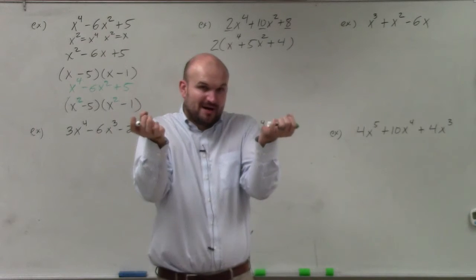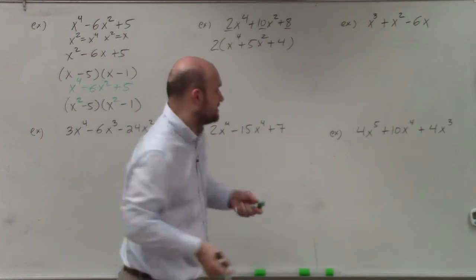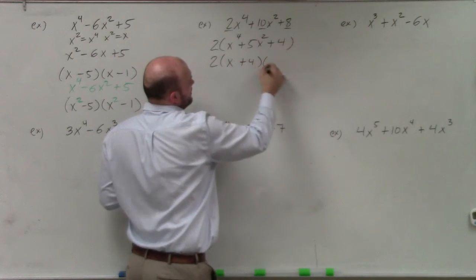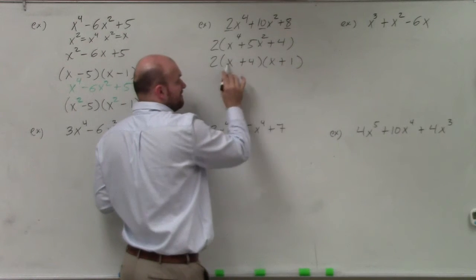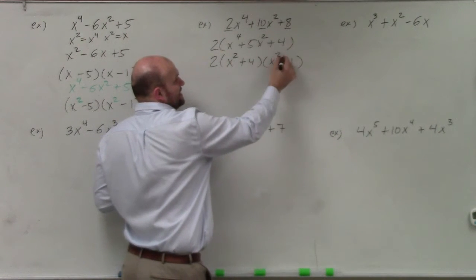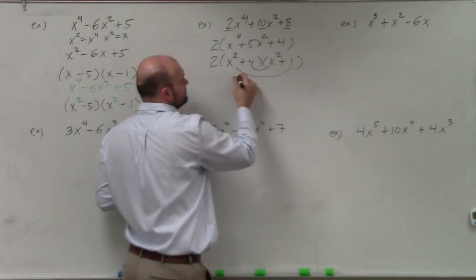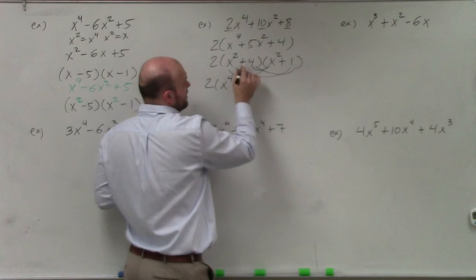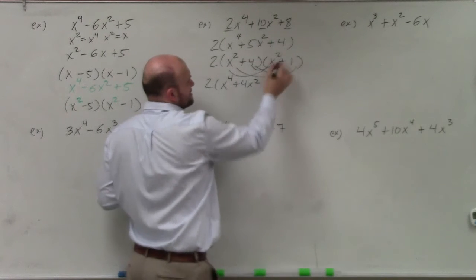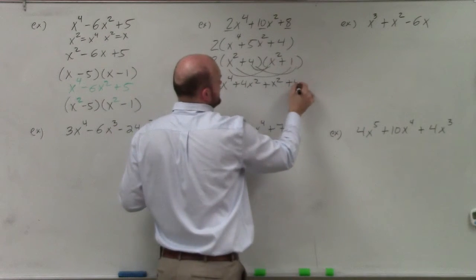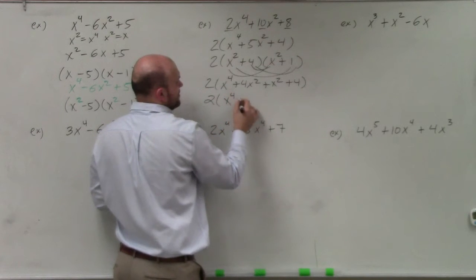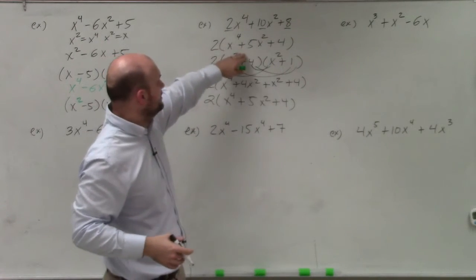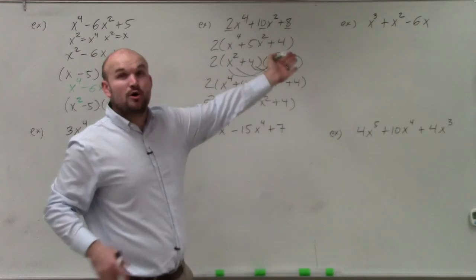What two numbers multiply to give you 4 and add to give you 5? That's going to be (x² + 4)(x² + 1), because x times x gives x², but I need x⁴, so it becomes x² times x². Let me verify: 2 times (x² · x²) = 2x⁴; 4 times x² is +4x²; x² times 1 is +x²; and 4 times 1 is +4. So 2(x⁴ + 5x² + 4). By multiplying this out I get back the expression inside, and distributing the 2 gives back the original problem.